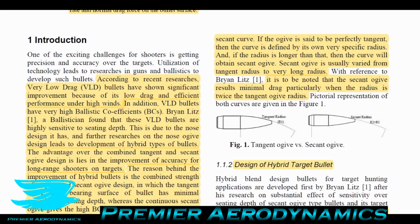Brian Litz, a ballistician, found that very low drag bullets are highly sensitive to seating depth. This is the distance from the very back of the bullet to the start of the nose curvature. They're very sensitive to this due to the nose design it has.